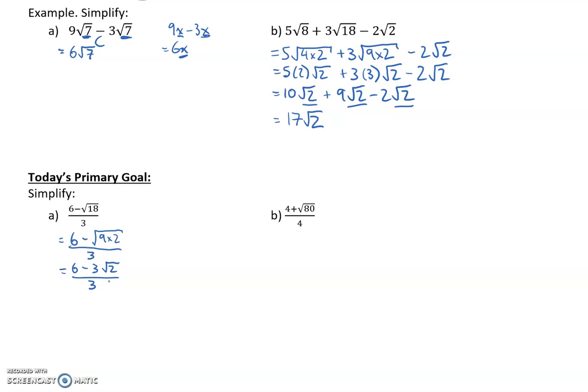That might not look like it simplifies much, but notice that 6, 3, and the 3 in the denominator all have a factor of 3. I'll factor a 3 out of the first two terms, leaving 2 - 1√2. If you expand that back, 3 times 2 gives you 6, and 3 times 1√2 gives you 3√2. So that works.